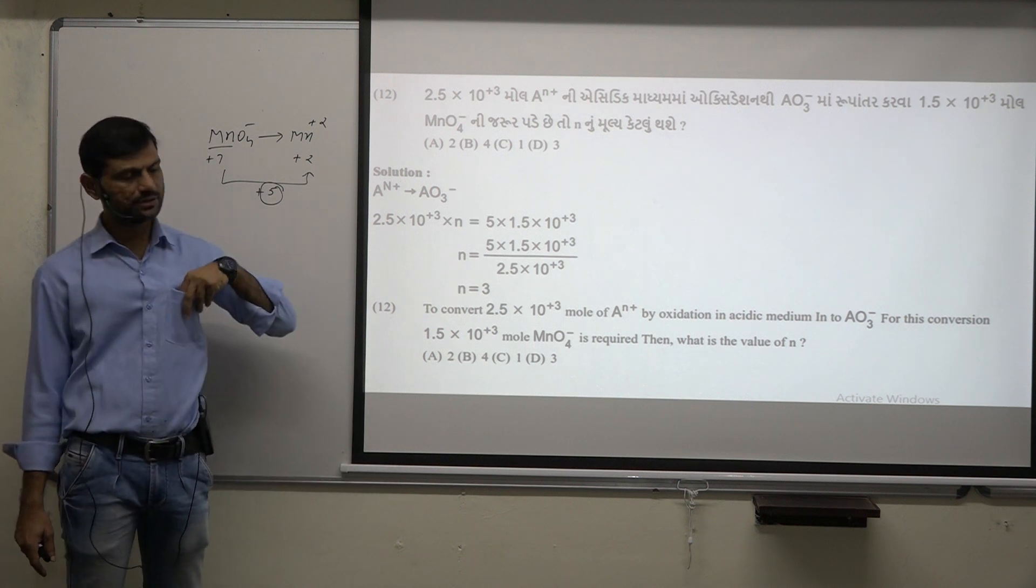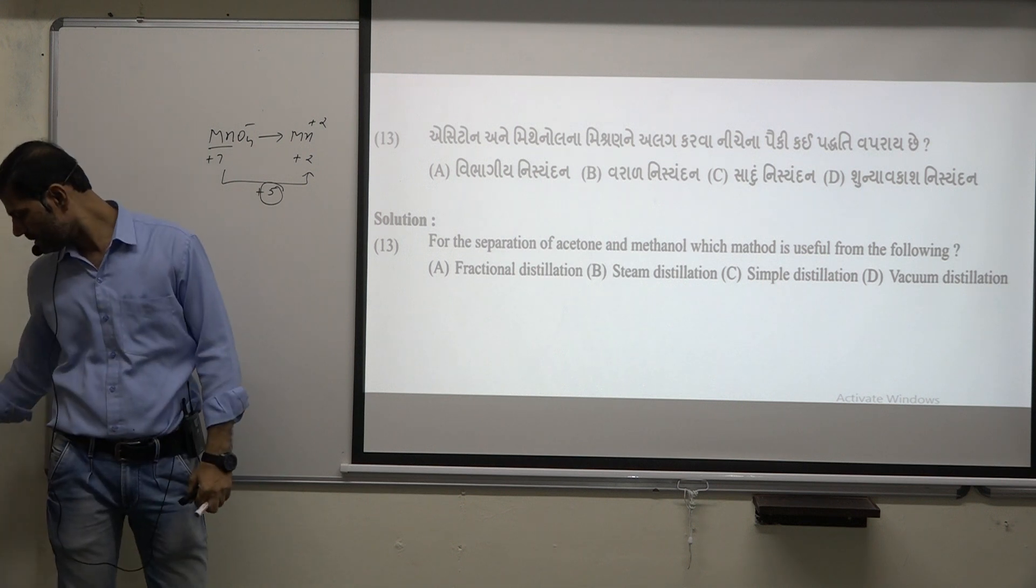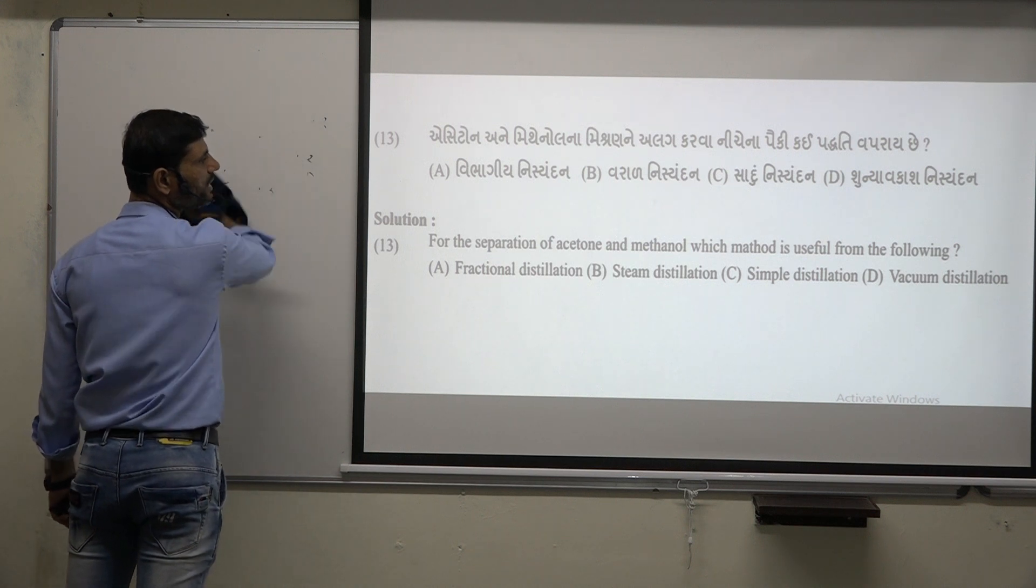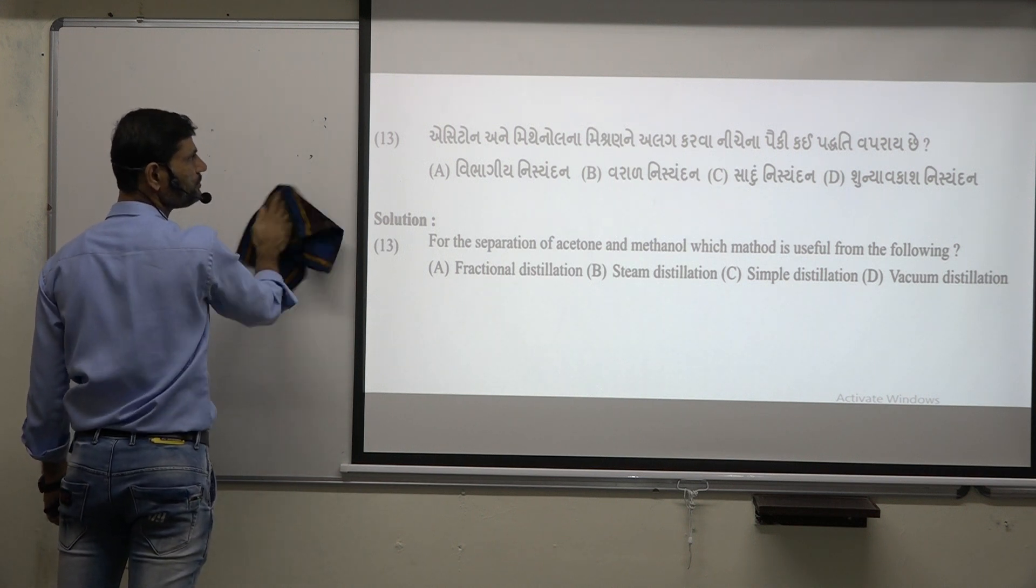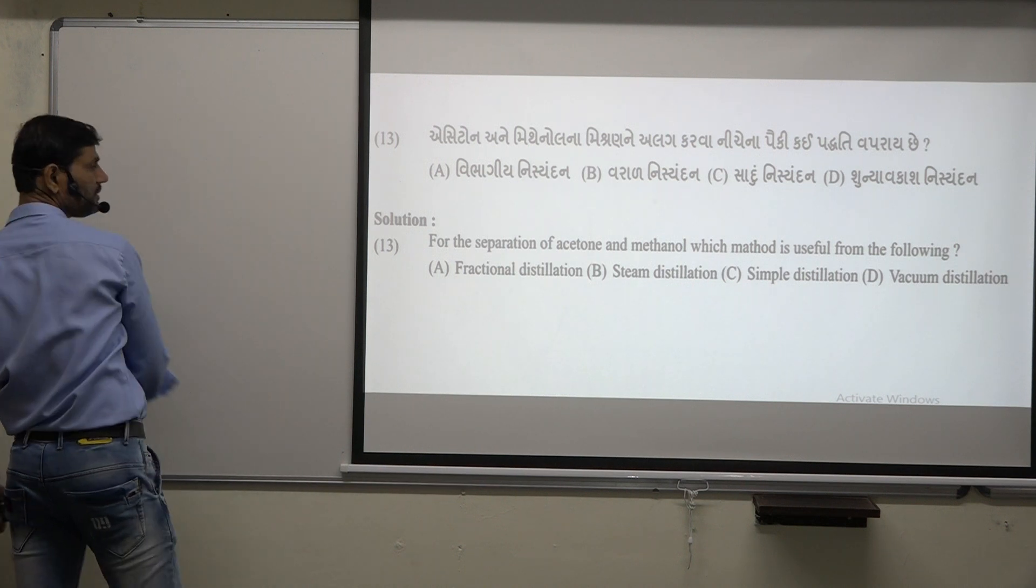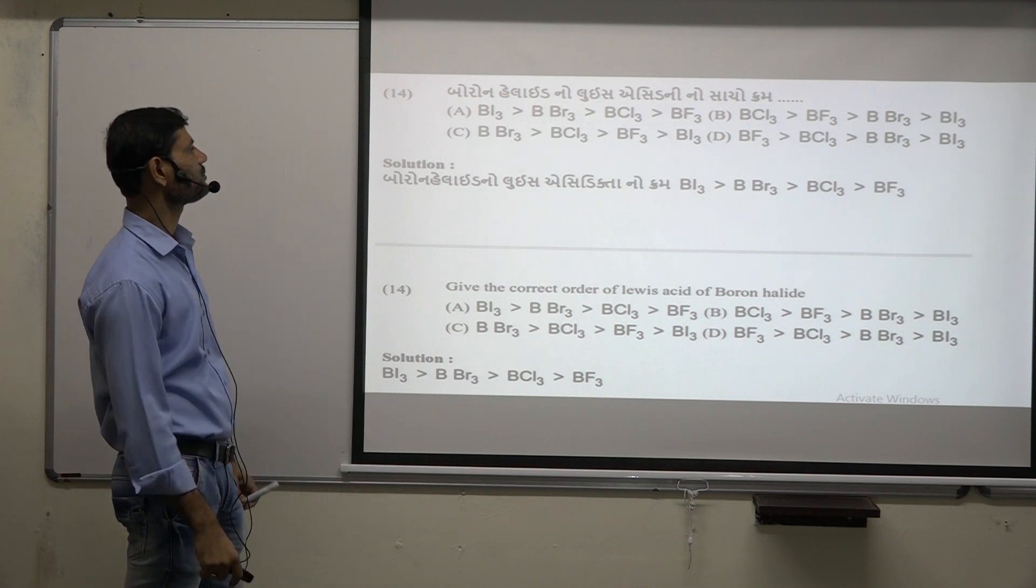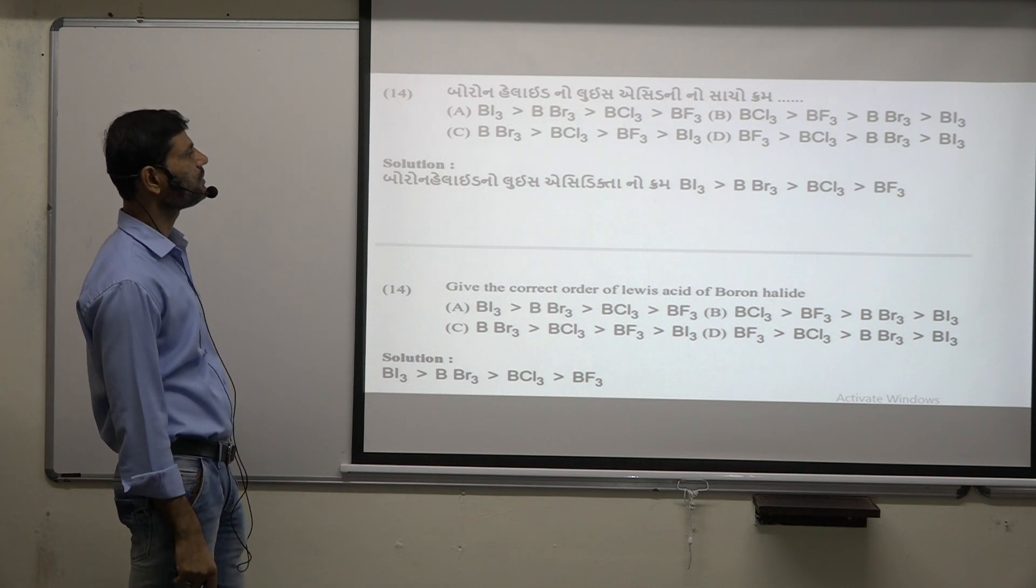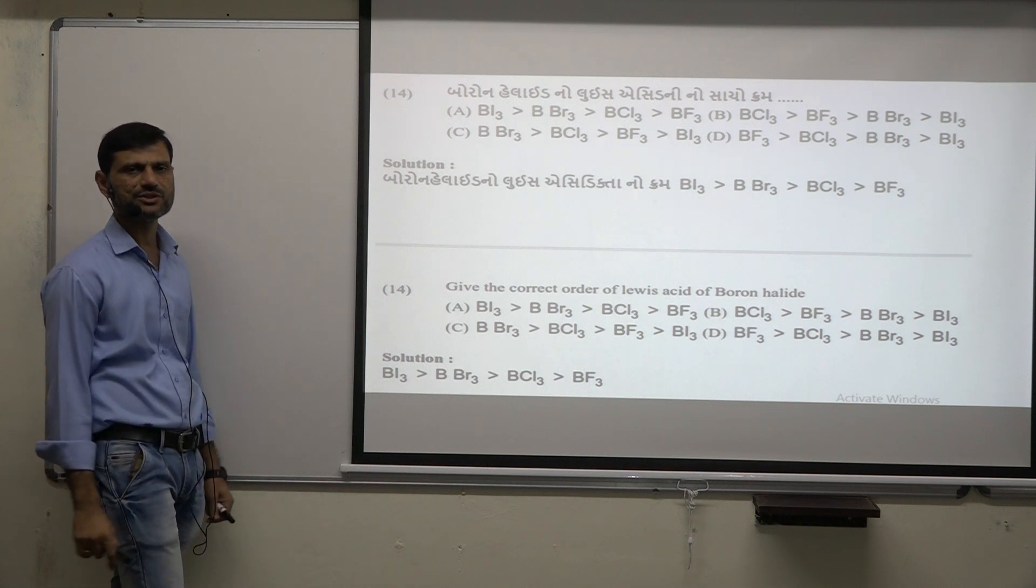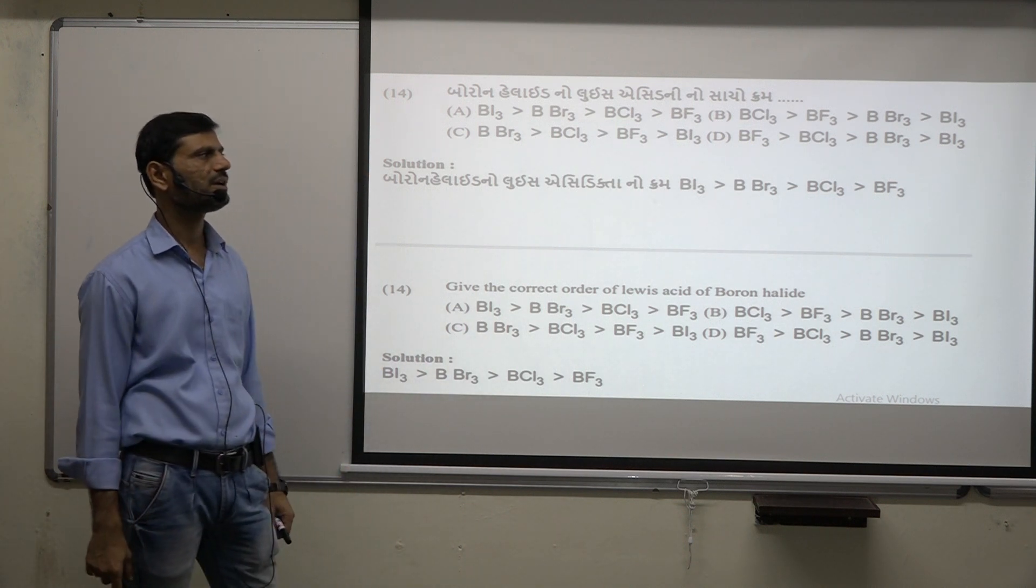Next question: For the separation of acetone and methanol, which method is useful? So you have to answer this question. Boron halide, Lewis acid, is such a compound. So boron halide, Lewis acid, is such a compound. So boron has been changed, central atom has been changed. But with this bonding, the atom is a change of halogen.